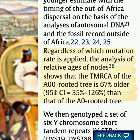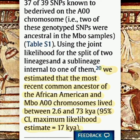I'm not going to read all of this section because it goes into short tandem repeats on the Y chromosome and the differences amongst the group being discussed — the A00L. But look: using the joint likelihood for the split of the two lineages and a sub-lineage internal to one of them, we estimated that the most recent common ancestors of the African-American and the Cameroonian A00L chromosomes lived between 2,600 and 73,000 years ago.